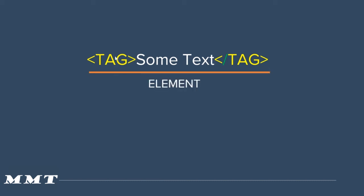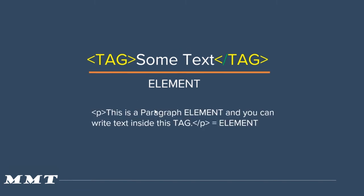What is an element? The whole thing from the starting tag to the ending tag including the content is called an element. When somebody says element, they are referring to the starting tag, ending tag, and the text as well. An example of an element could be a paragraph tag: less-than p greater-than, then text inside it, then less-than forward-slash p greater-than. Everything from the starting tag to the ending tag including the text is called an element — this is a paragraph element and you can write text inside this tag.